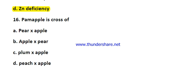Question number sixteen: Pama apple is a cross of — options are pear cross with apple, apple cross with pear, plum cross with apple, and peach cross with apple. Pear cross with apple produces Pama apple.